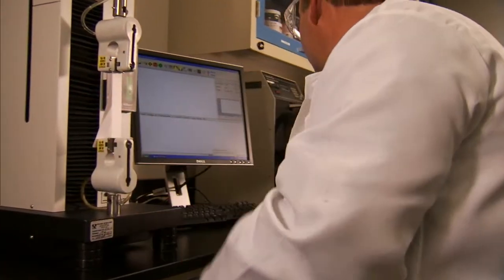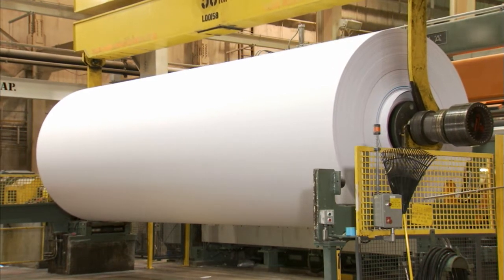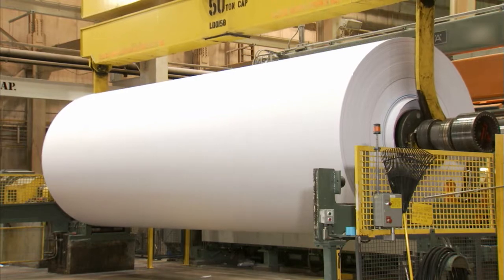In one uncoated free sheet mill, OptiFill enabled a 5% filler increase while maintaining paper quality and productivity. As a result, the mill is saving more than $1 million per year.